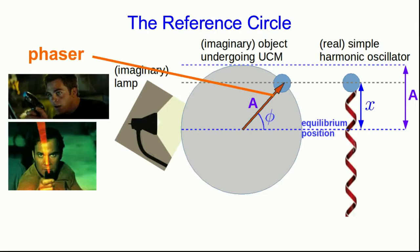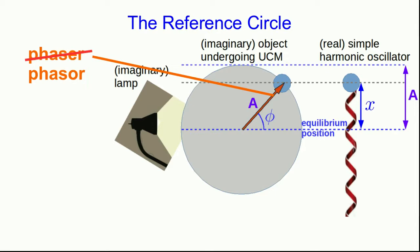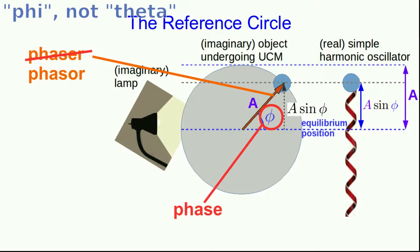The angle it makes is called the phase. We can write the position of the simple harmonic oscillator in terms of the phase because this distance here is A sin theta, and so is the position of the simple harmonic oscillator.